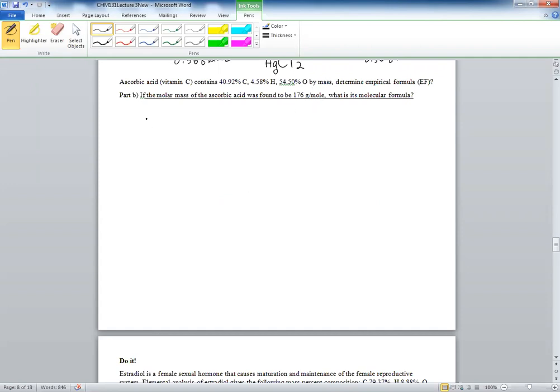Now we start again with our numbers: 40.92. We're going to say that's 100, so that's grams of carbon, 4.58 grams of hydrogen, and 54.50 grams of oxygen. Remember our next step is we need to convert to moles. Anytime you see grams in stoichiometry you will have to convert to moles.